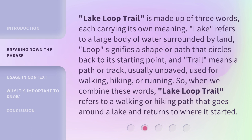Lake Loop Trail is made up of three words, each carrying its own meaning. 'Lake' refers to a large body of water surrounded by land. 'Loop' signifies a shape or path that circles back to its starting point. And 'trail' means a path or track, usually unpaved, used for walking, hiking, or running. So, when we combine these words, 'Lake Loop Trail' refers to a walking or hiking path that goes around a lake and returns to where it started.